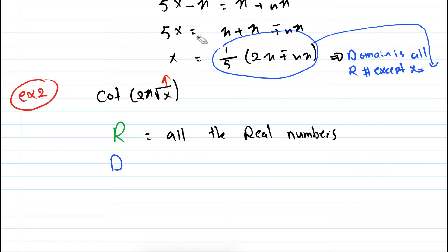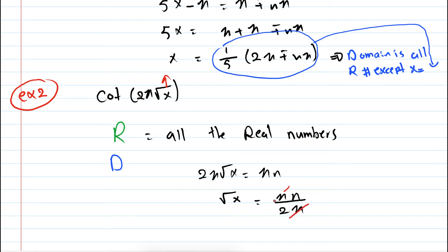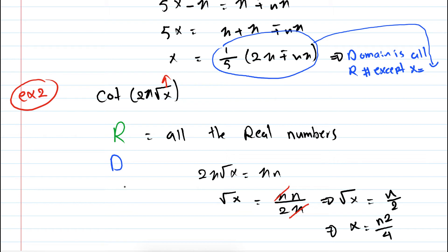So here the domain: we set 2π times square root of x equal to 2πn. Multiplying both sides by 1/(2π), we get square root of x = n/2. Squaring both sides gives x = n²/4. So we have vertical asymptotes at x = n²/4. The domain is all the real numbers except those x's equal to n²/4 and except those values that are negative.